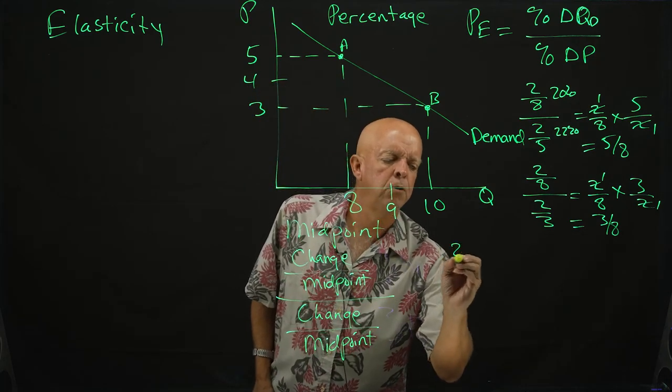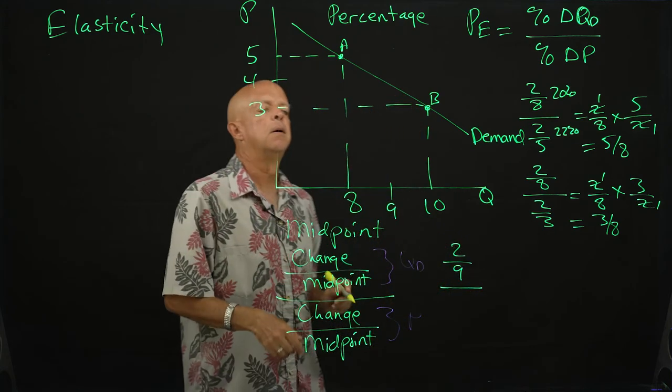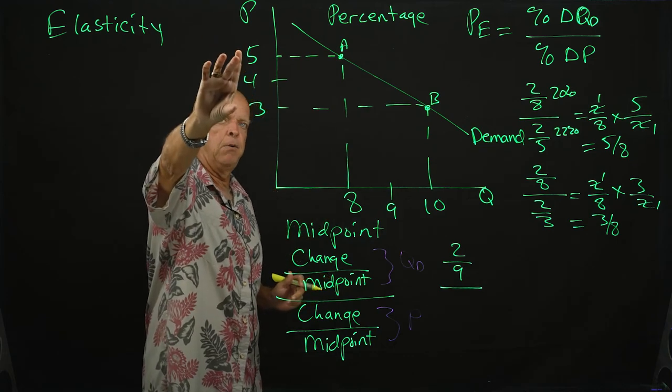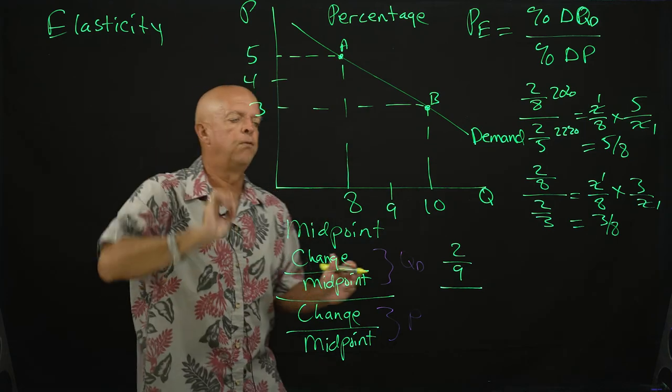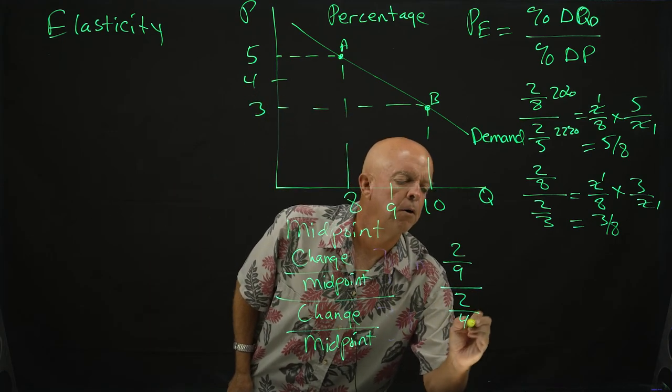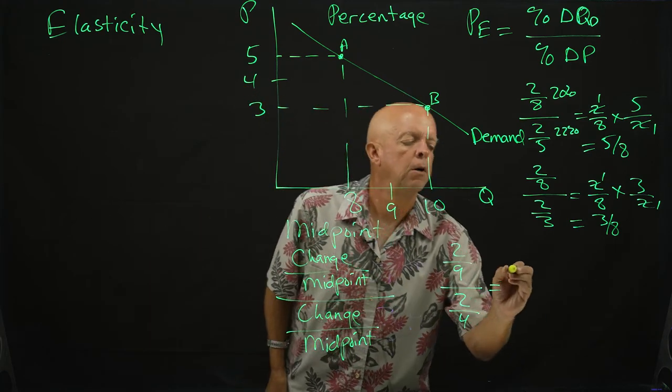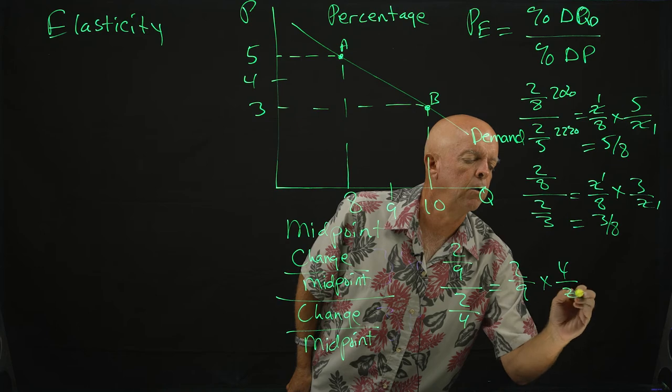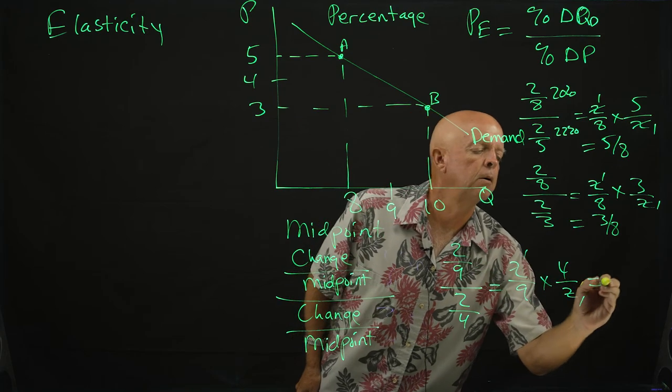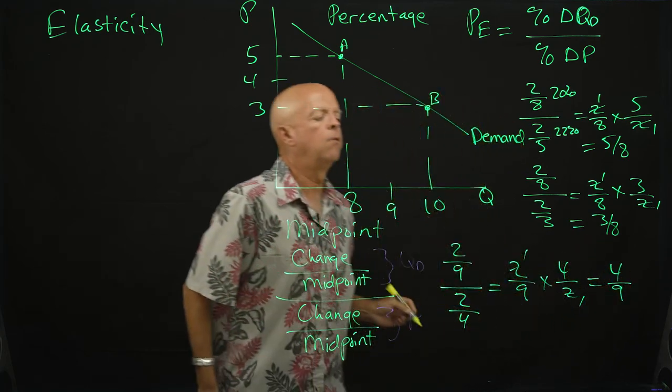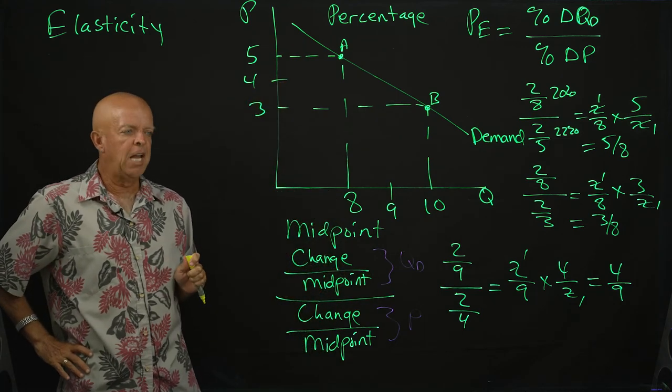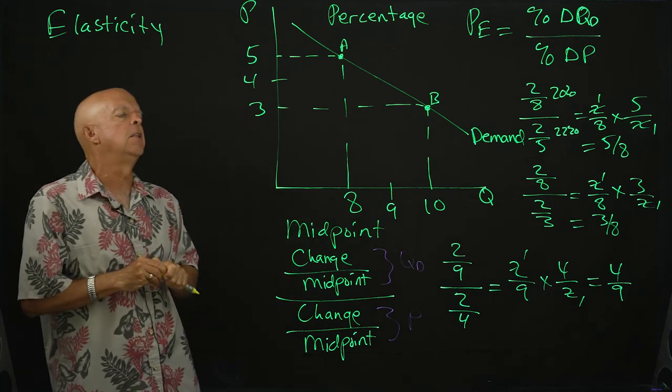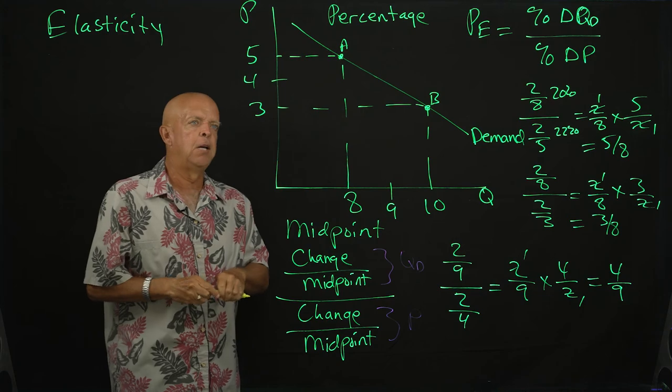So now we have the change in quantity demanded - this would be two over nine, two over the midpoint there. And here it would be the change in price, two over four or one half. Two ninths times four over two, we have four ninths. And this number will be the same whether you have an increase or a decrease in the price.